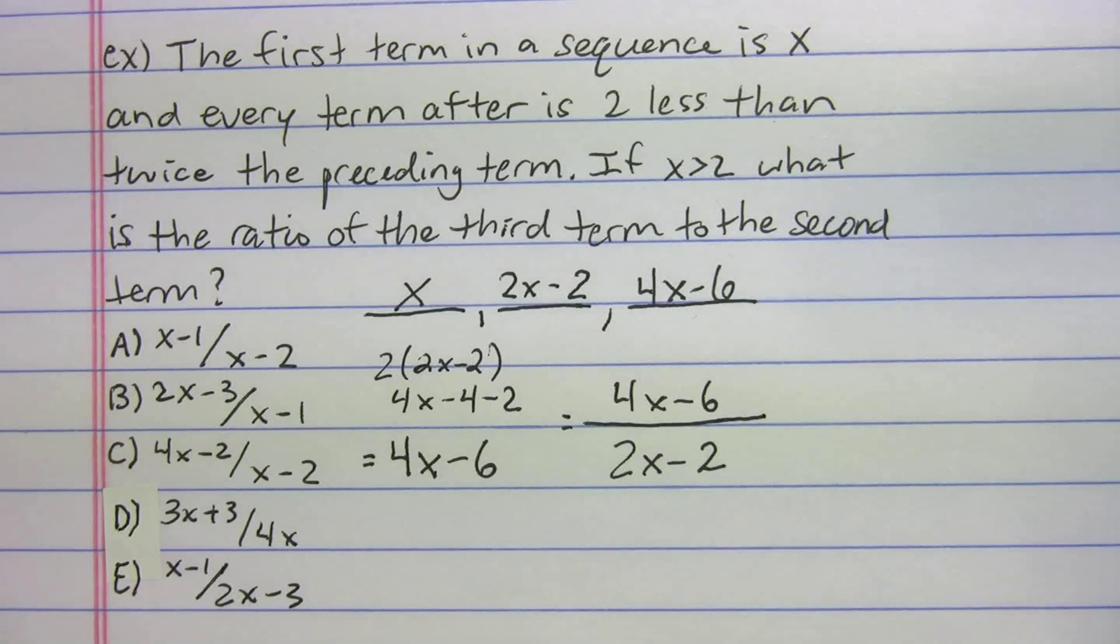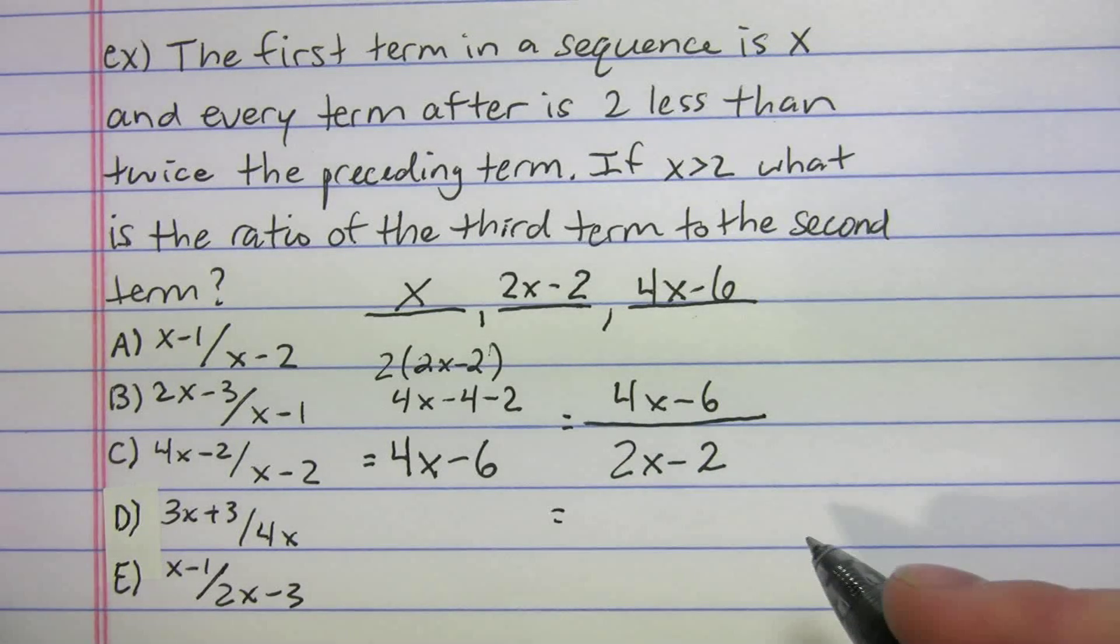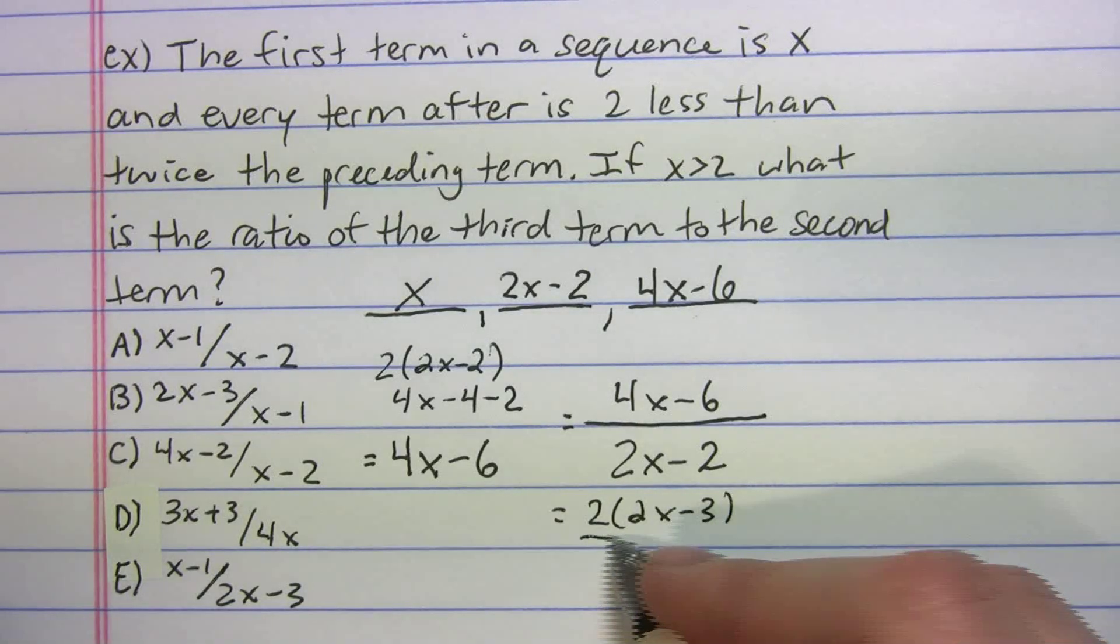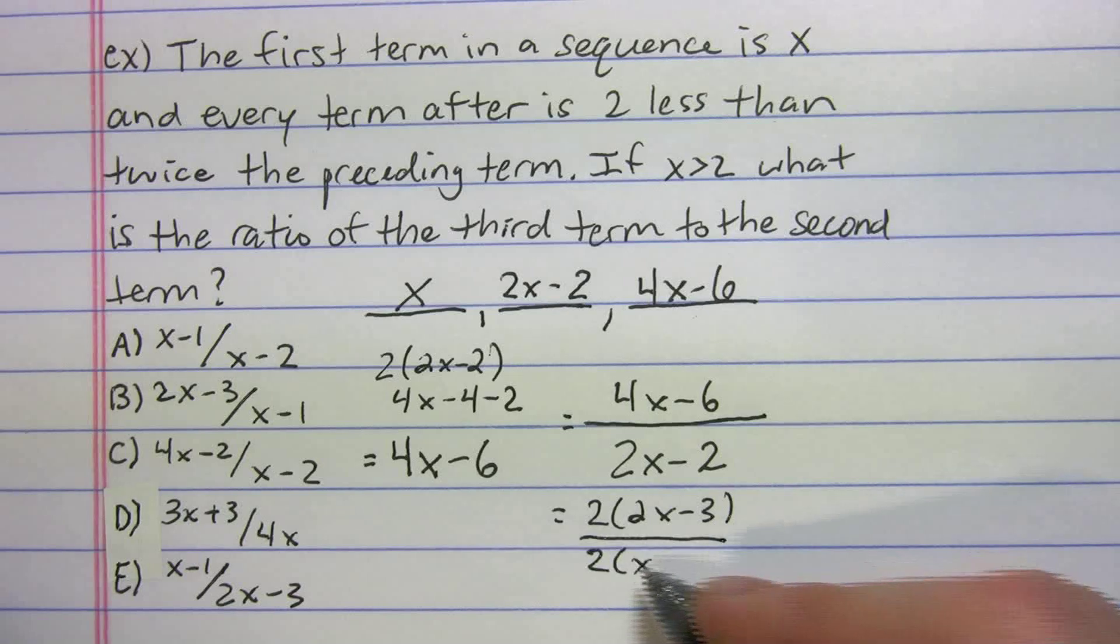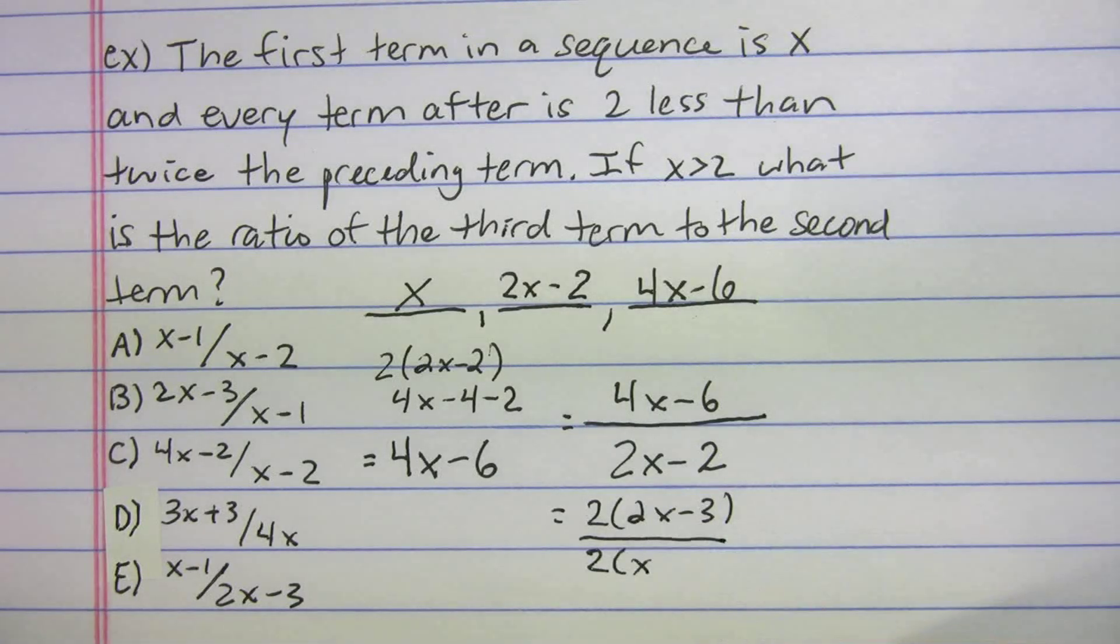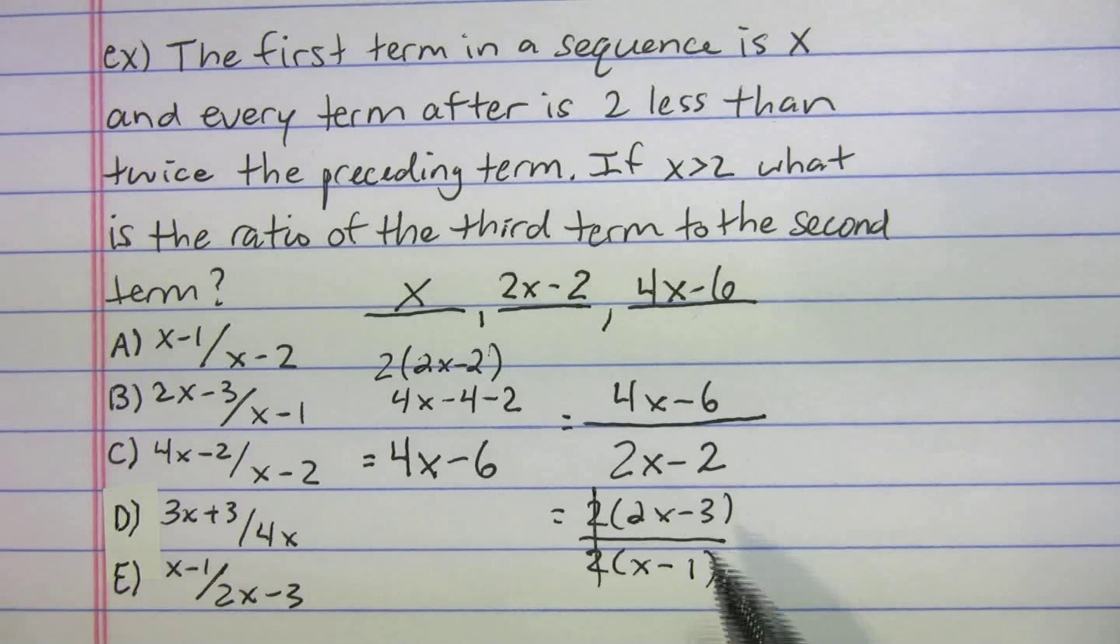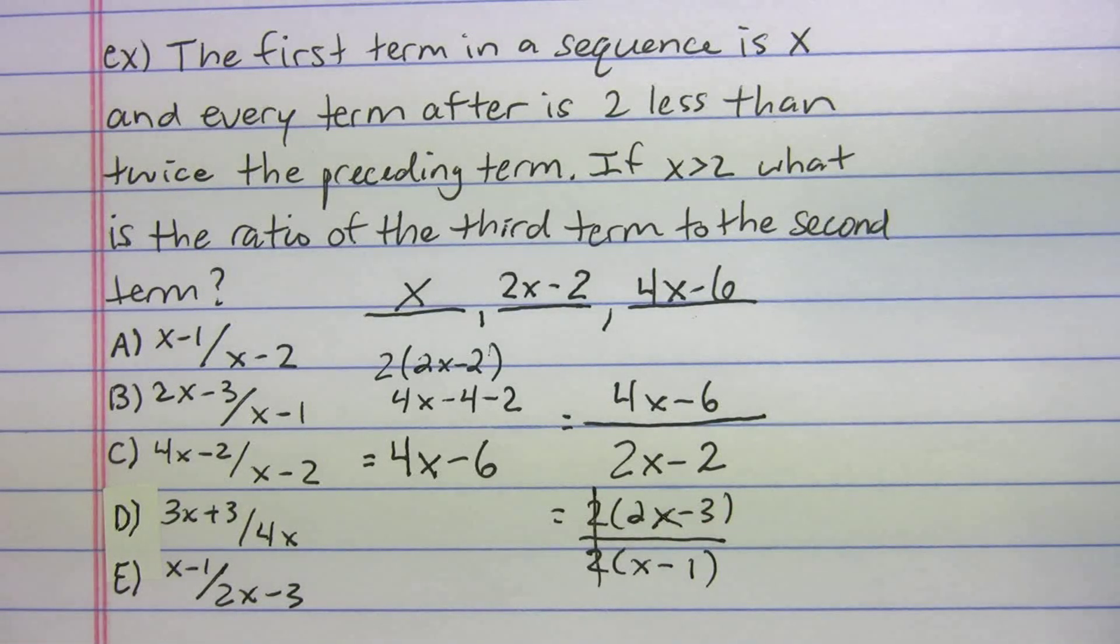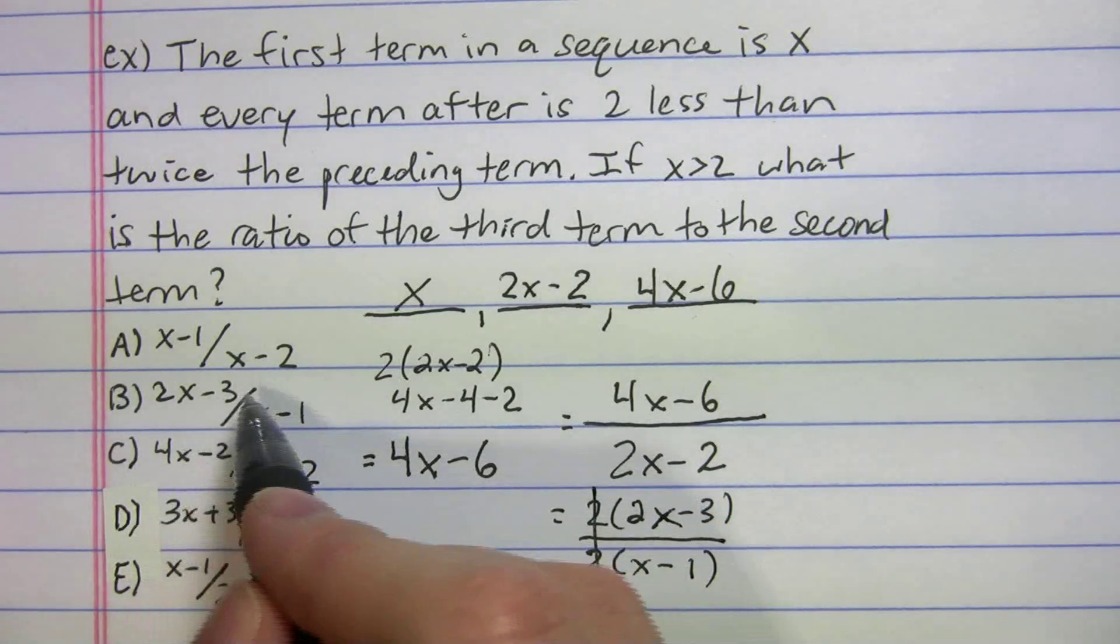We're going to simplify that because unfortunately that's not one of the answers. If you look at our answer choices, we don't see 4X minus 6 over 2X minus 2. So we'll factor out a 2 and we get 2 times 2X minus 3 all over 2 times X minus 1. The twos cross out and we get 2X minus 3 all over X minus 1. Choice B.